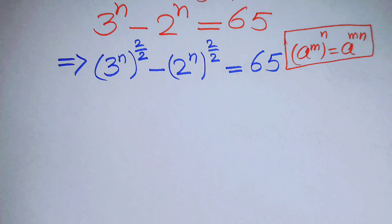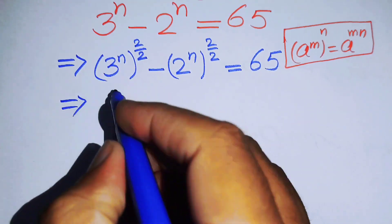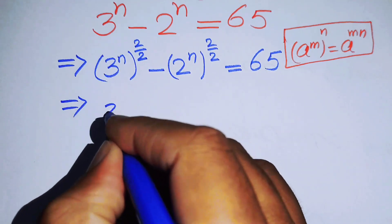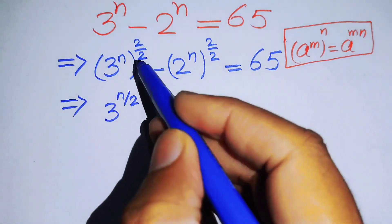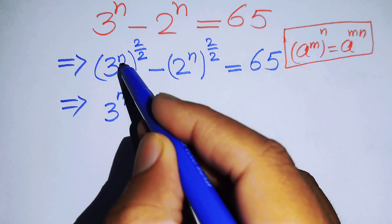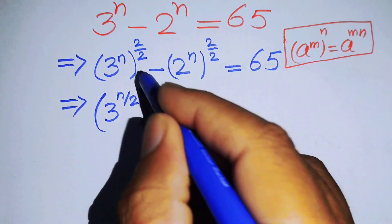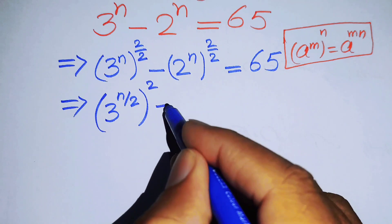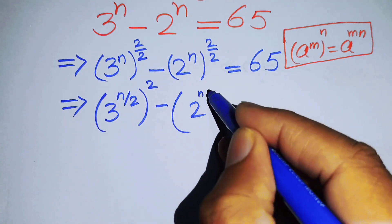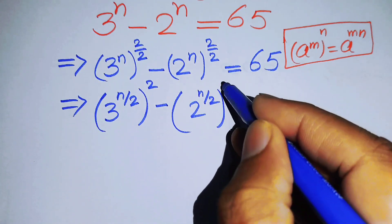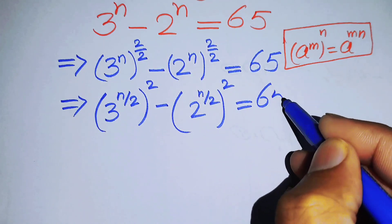According to this law, we write the equation as: 3 to the power of n over 2, where we multiply 1 over 2 by n, and keep the 2 as it is — minus 2 to the power of n over 2 — and the whole expression squared equals 65.